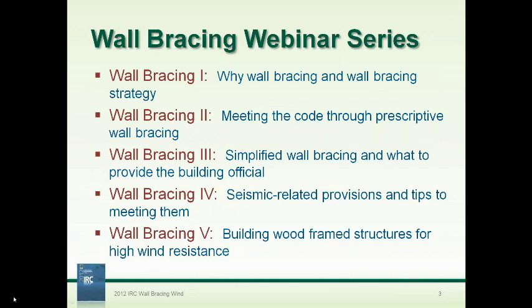In the third webinar, we're going to look at a couple of simplified approaches to bracing. We're also going to talk about submittals — what do you prepare for the building official as part of plan review. APA has released a brand new online tool called the APA Bracing Calculator, which can help you determine code compliance and give you a report to submit to the building official. Webinar four covers seismic-specific provisions, and webinar five addresses high wind resistance — specifically when wind speeds are 110 mph or greater and you fall outside of wall bracing.